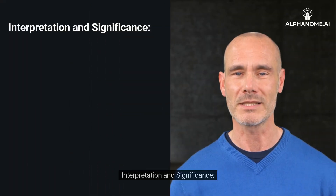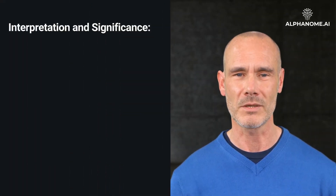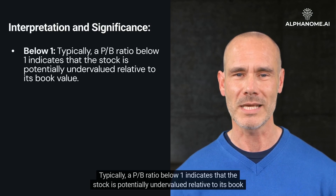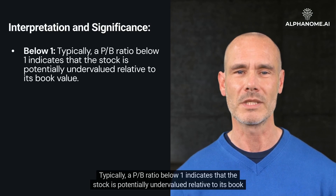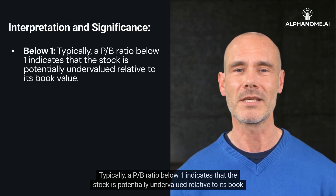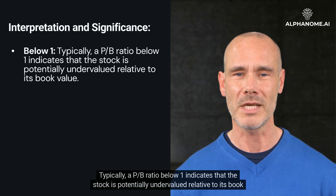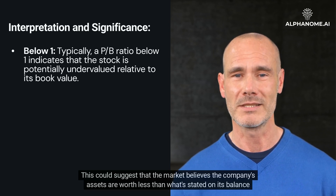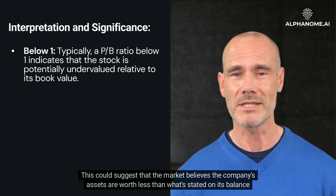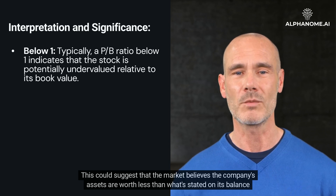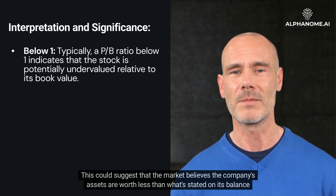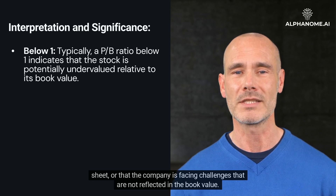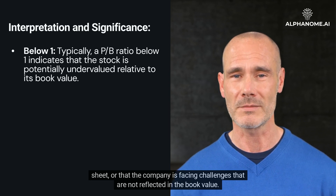Regarding interpretation and significance — below 1: a P/B Ratio below 1 indicates that the stock is potentially undervalued relative to its book value. This could suggest that the market believes the company's assets are worth less than what's stated on its balance sheet, or that the company is facing challenges not reflected in the book value.